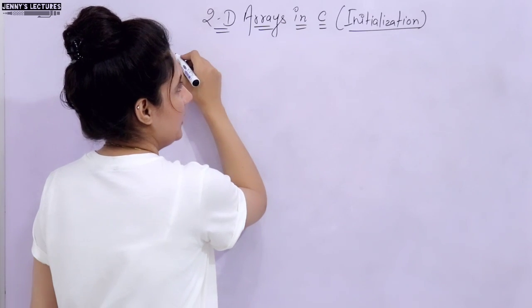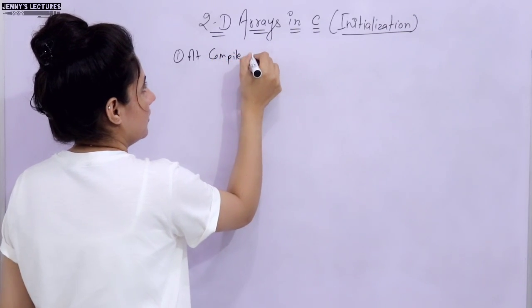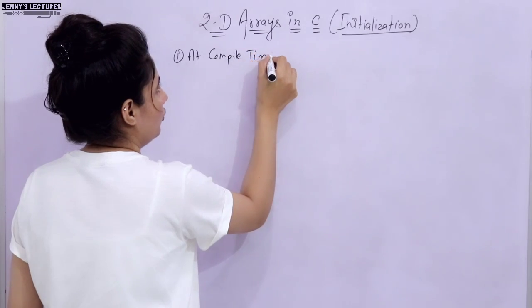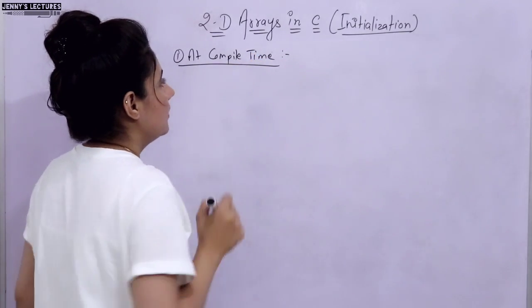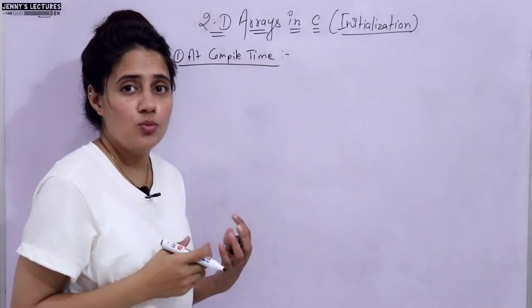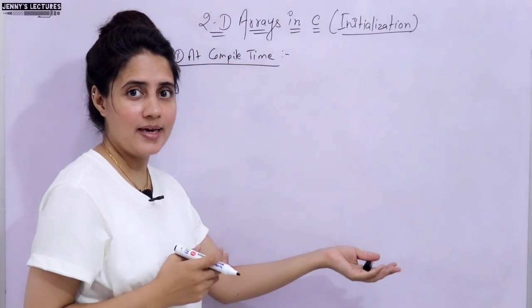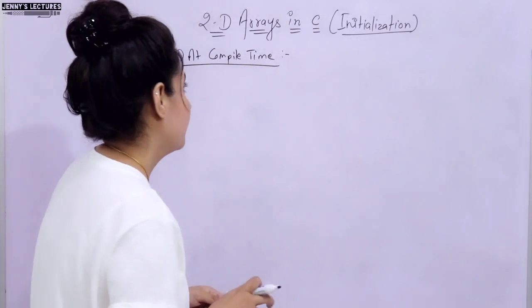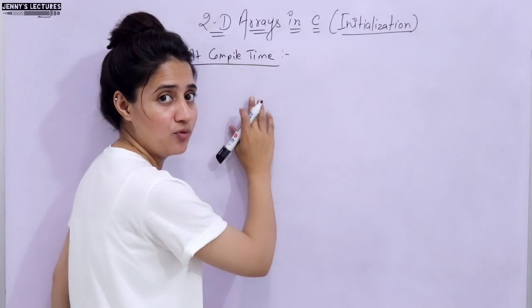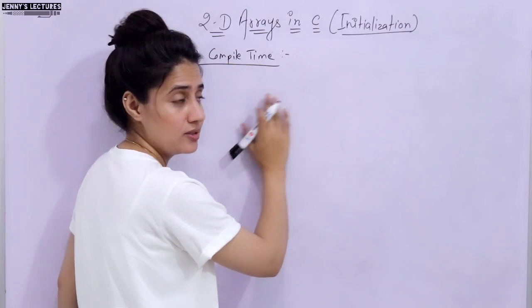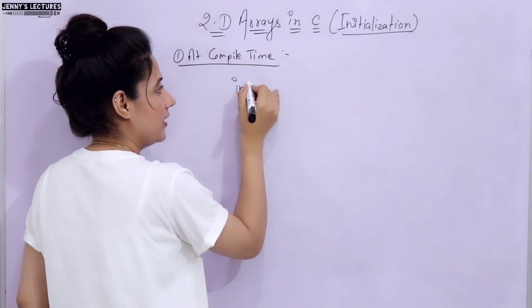First, we will discuss compile-time initialization — how to initialize a 2D array at compile time. The syntax is almost similar to initialization of a 1D array, just a little bit different. At compile time, means at the time of declaration only, you will give the values.